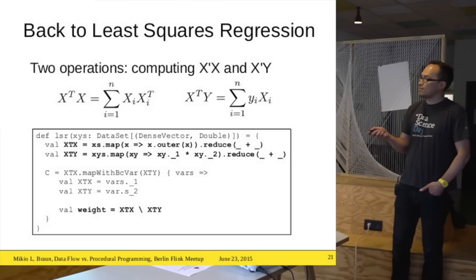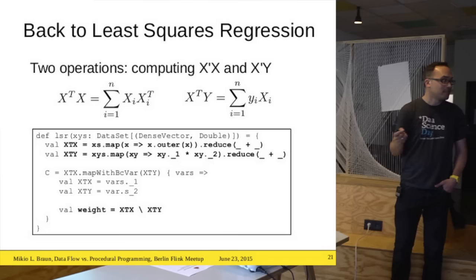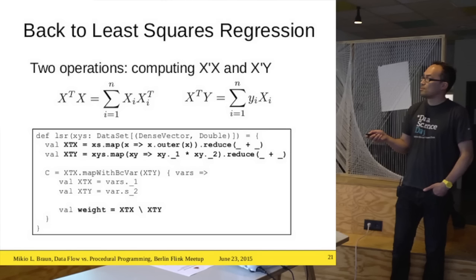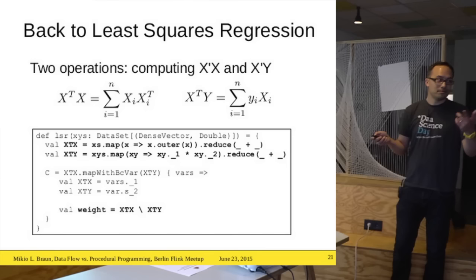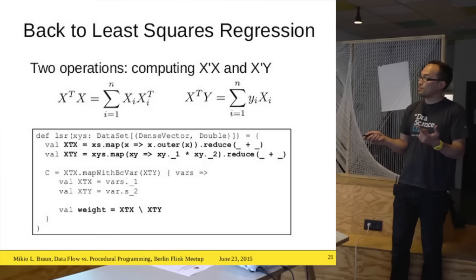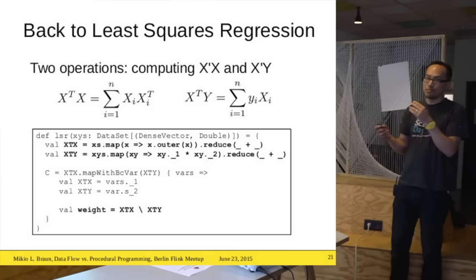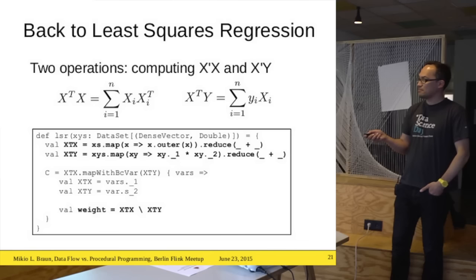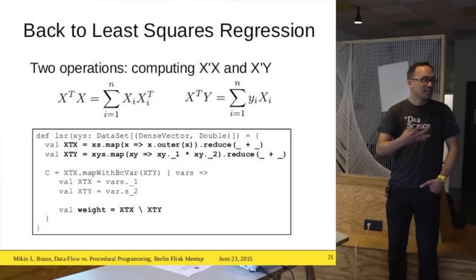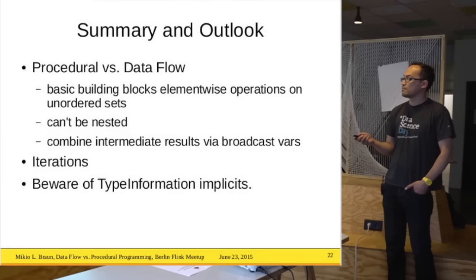The code you get for least squares regression looks very much like Python — which I think is very nice. You compute X^T X by mapping to outer products and summing. You compute X^T y by multiplying and summing. These are intermediate results that are datasets with only one element. To use them together, you broadcast one dataset into the computation of the other. Then inside the function you just use the Scala Breeze matrix library to solve the linear equation. The result, of course, is the weight vector — but as a dataset.